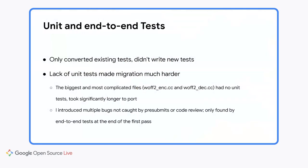Let's talk about the test coverage and the bugs I ran into. I only converted existing tests and did not write any new tests, with one exception: a simple unit test for the Brotli FFI, since the FFI glue code was new code that I added. The lack of unit tests made the migration much harder because the biggest and most complicated files, WOFF2-ENC and WOFF2-DEC for encoding and decoding, had no unit tests and took significantly longer to port. Just the WOFF2-DEC took me four full days of work. These files also had the most bugs introduced, which were only found and fixed after the first pass, once the end-to-end tests were ported.